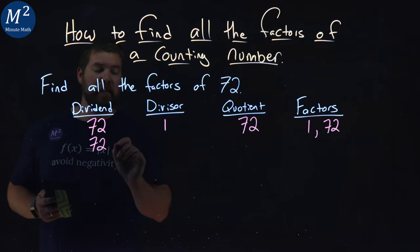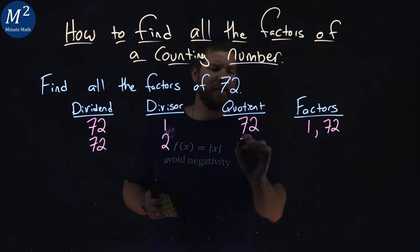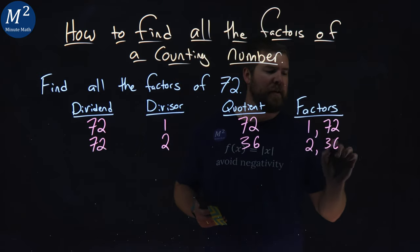Second one, 72, divisor. Next number up, 2. Does 2 go into 72? Yes, 36. So the factors here are 2 and 36.